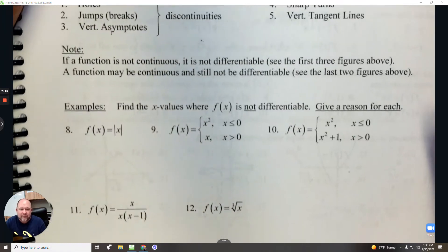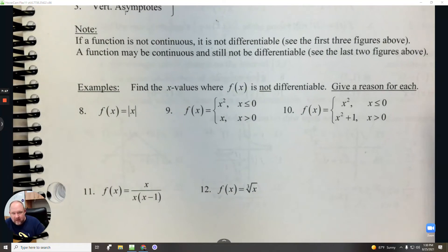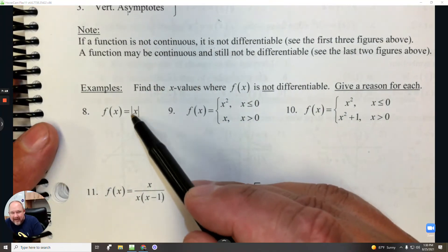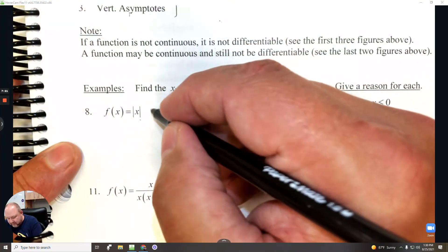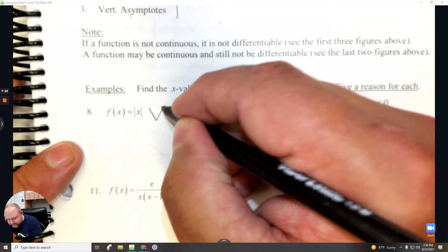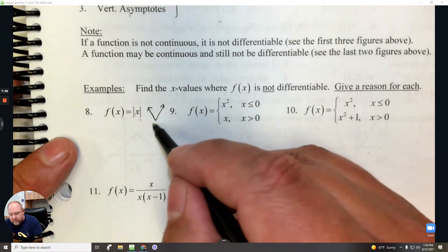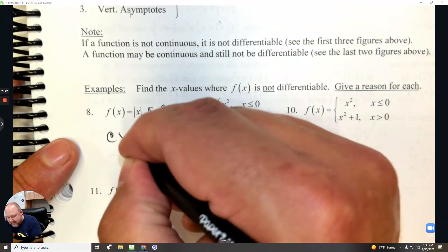Alright, find the x values where the function is not differentiable. The absolute value for x, this is what the graph looks like. There's a sharp corner at x equals 0.